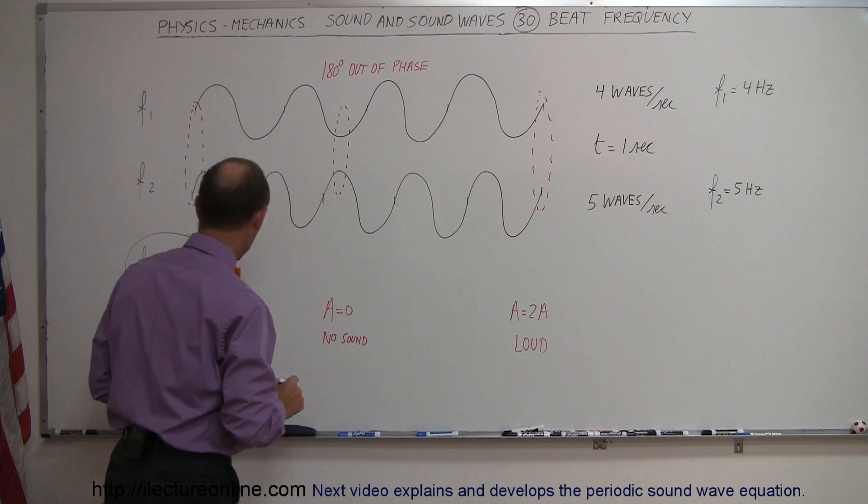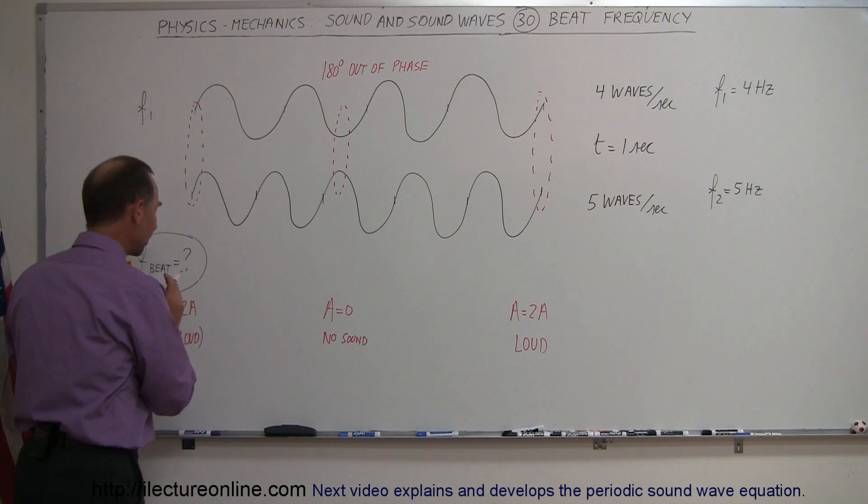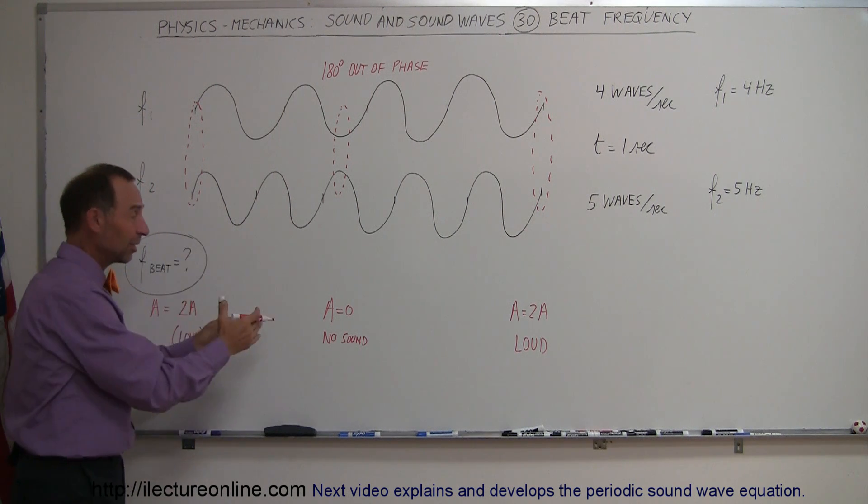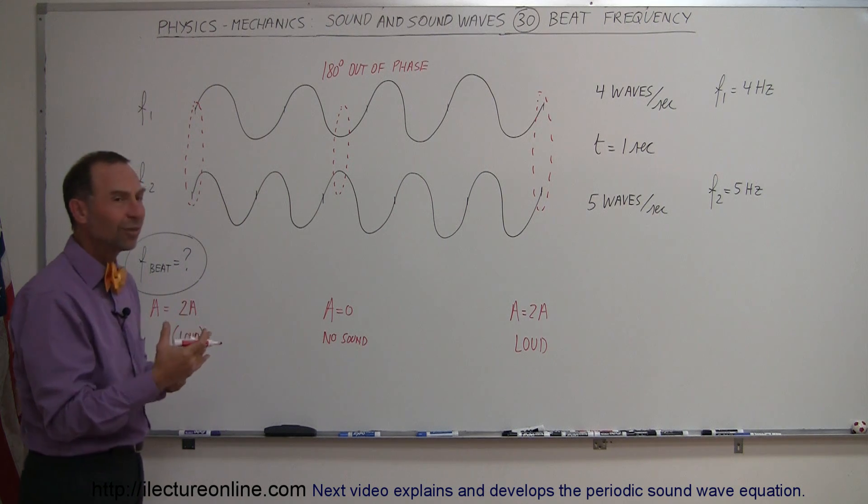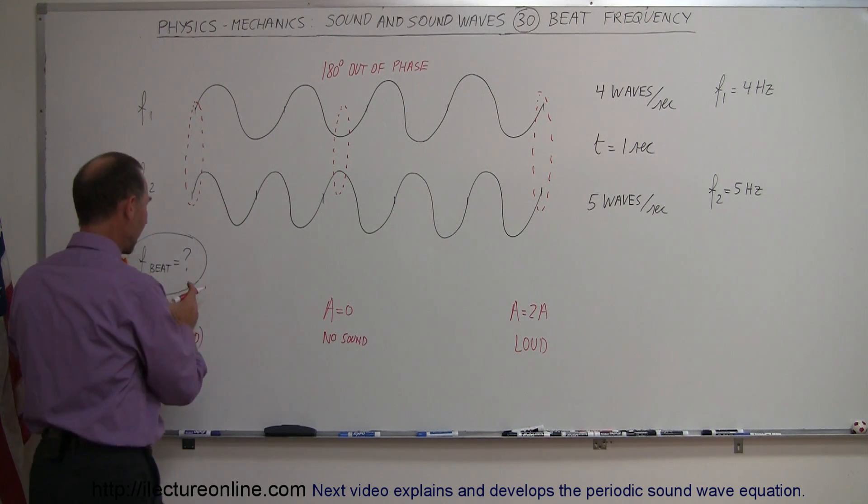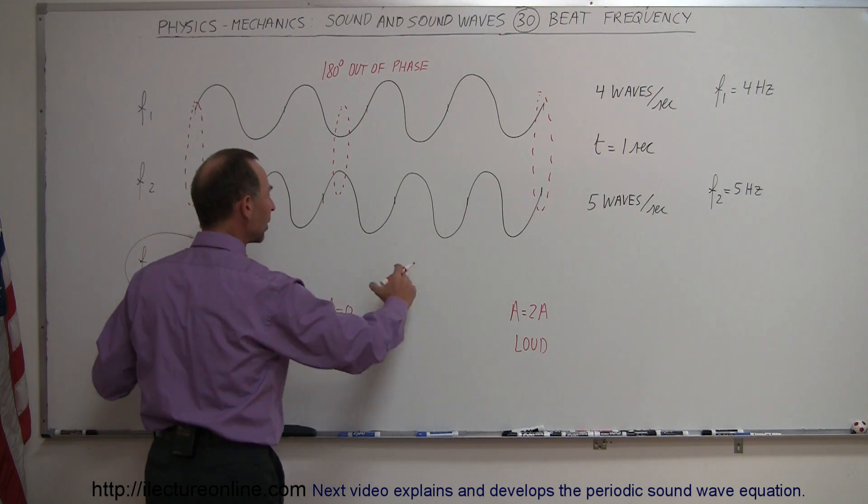So what happens then is you hear a loud sound, you hear nothing, you hear a loud sound. And so every time you hear a loud sound, you hear something, then you hear nothing, hear something. So the two waves together form their own frequency of a beat: loud, nothing, loud, nothing. And so every second you would hear a loud sound.